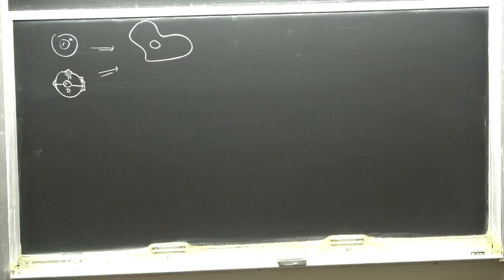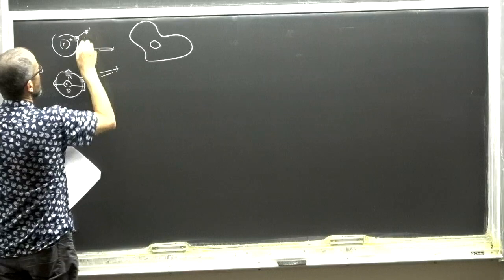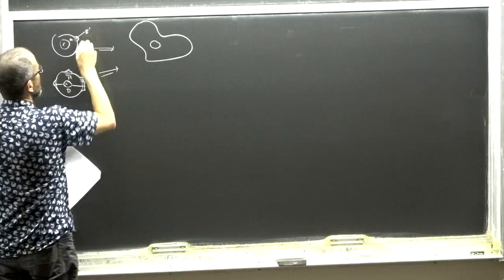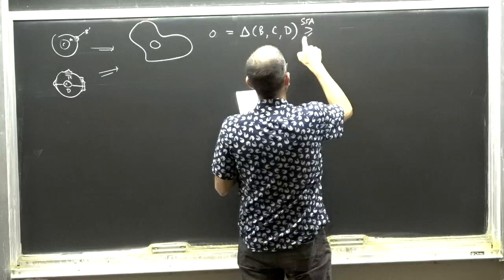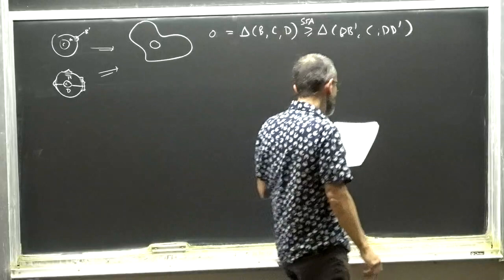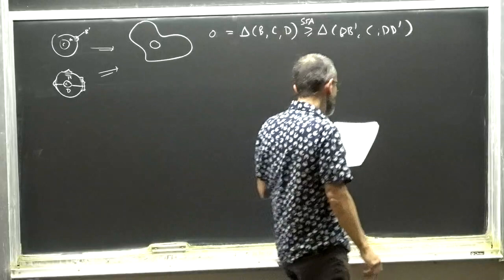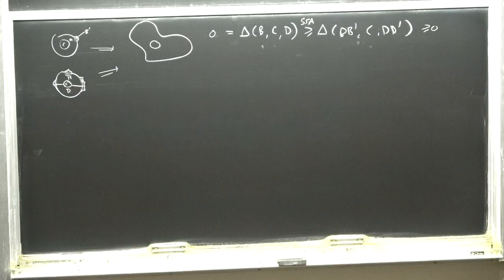If it's true for round balls it's also true for wiggly balls with the same topology, and the reason is simple — again an application of strong subadditivity. One necessary step is to deform B while preserving C: suppose we add a little B' here. Then strong subadditivity says that Δ(B∪B', C; D∪D') is bounded above by Δ(BC;D), which is itself positive, so if this is zero then the deformed version is zero as well. There's a similar idea for deforming C while fixing B.